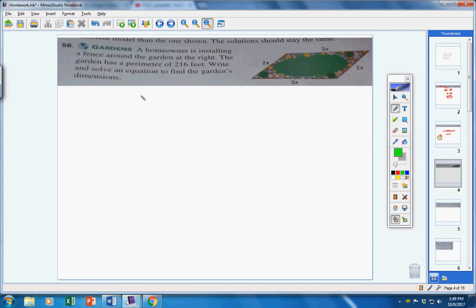Moving on to number 56. A homeowner is installing a fence around his garden to the right. He has a perimeter of 216 feet. Find the garden's dimensions. Well, guys, think about it. Perimeter means the distance around something.